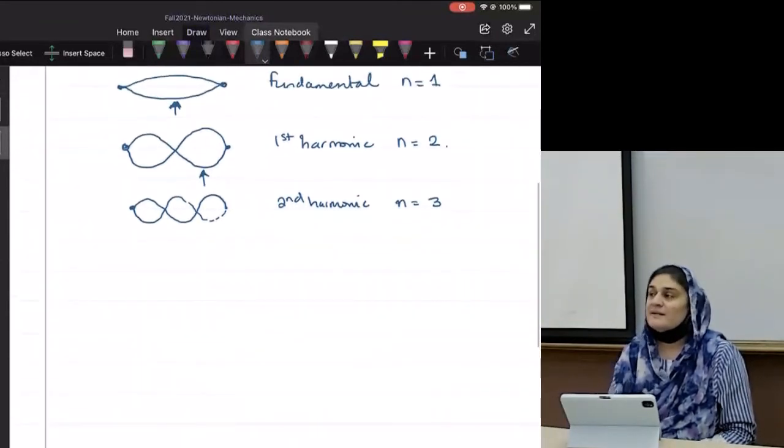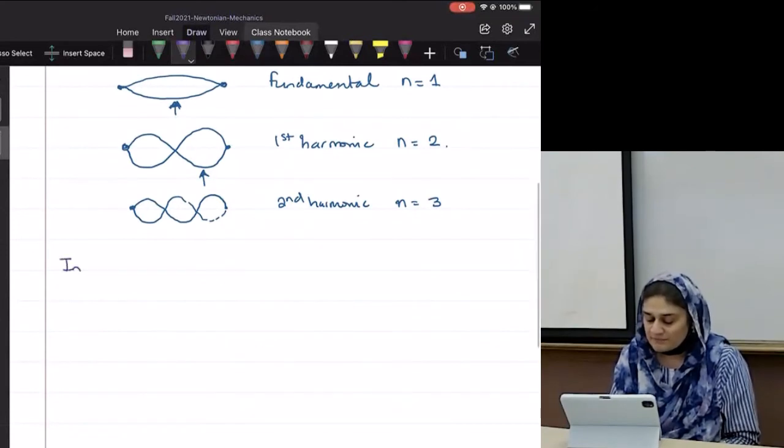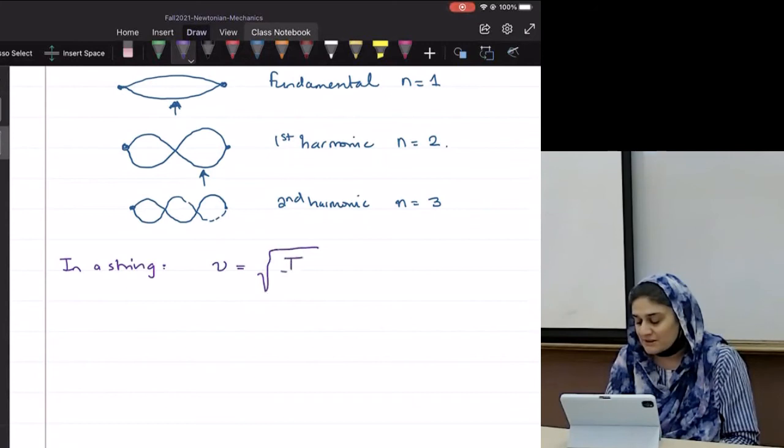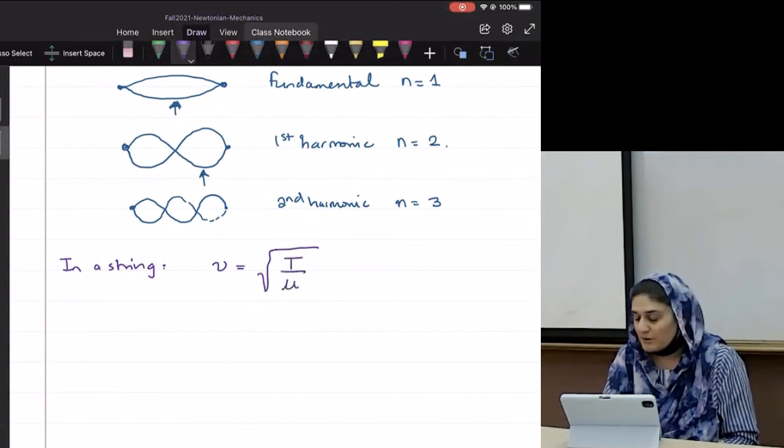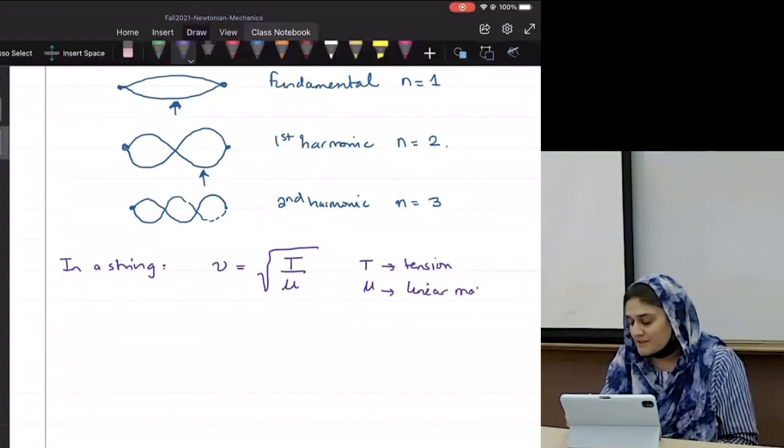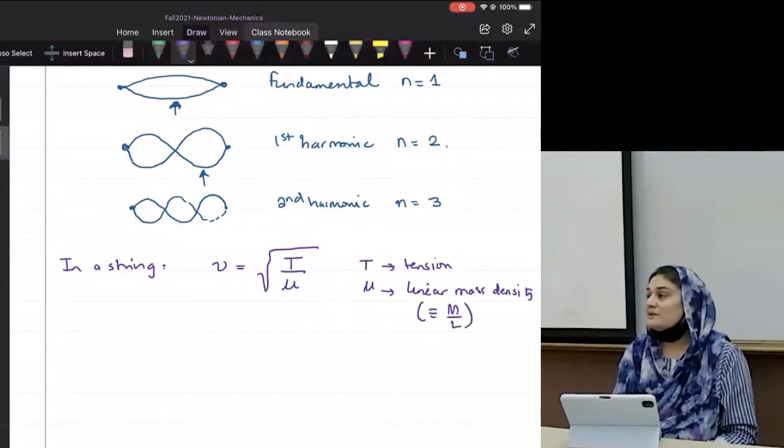Now, how fast do waves travel in a string? So in a string, the speed is equal to square root of T over mu, where T is the tension, and mu is defined as linear mass density or m over l, mass per unit length.